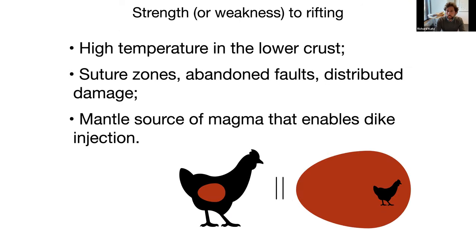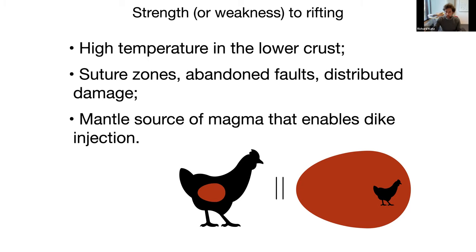What then could explain the strength or weakness of continents to rifting? It might come from high temperatures in the lower crust, weakening the continent and enabling rifting at lower force levels. It could be suture zones, abandoned faults, or distributed damage inherited from previous rifting or other tectonics. Or it could be a mantle source with an abundance of magma enabling dike injection into the continent where we see rifting.